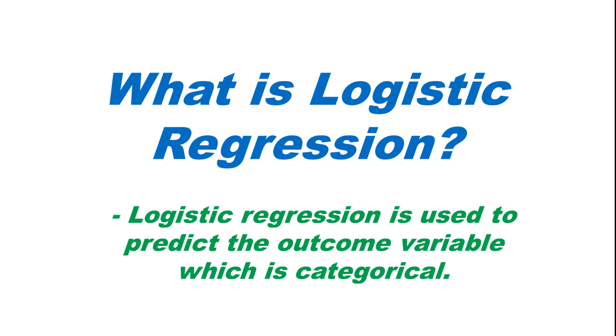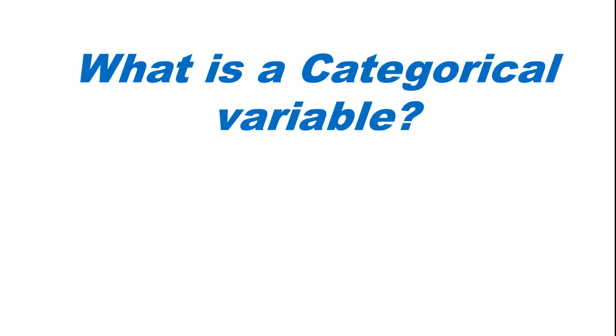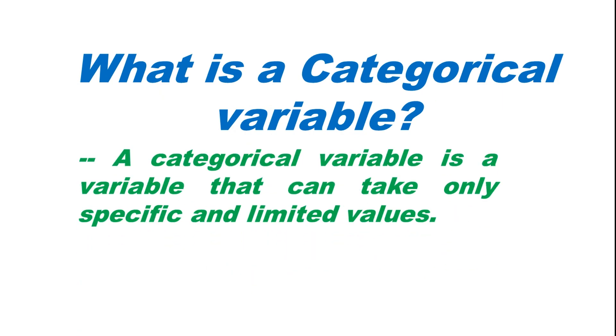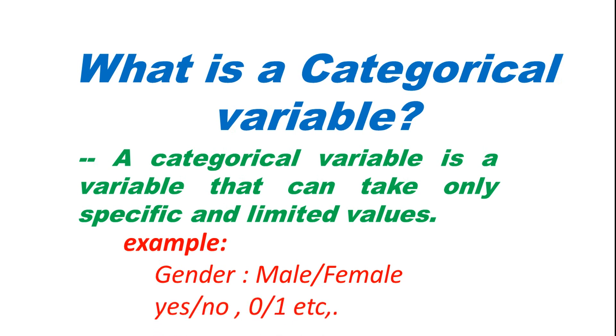Logistic regression is used to predict the outcome variable which is categorical. A categorical variable is a variable that can take only specific and limited values. For example, gender is a categorical variable because it can only take male and female as values, and some variables which take yes or no as values and 0 or 1, etc. These kinds of variables are called categorical variables.